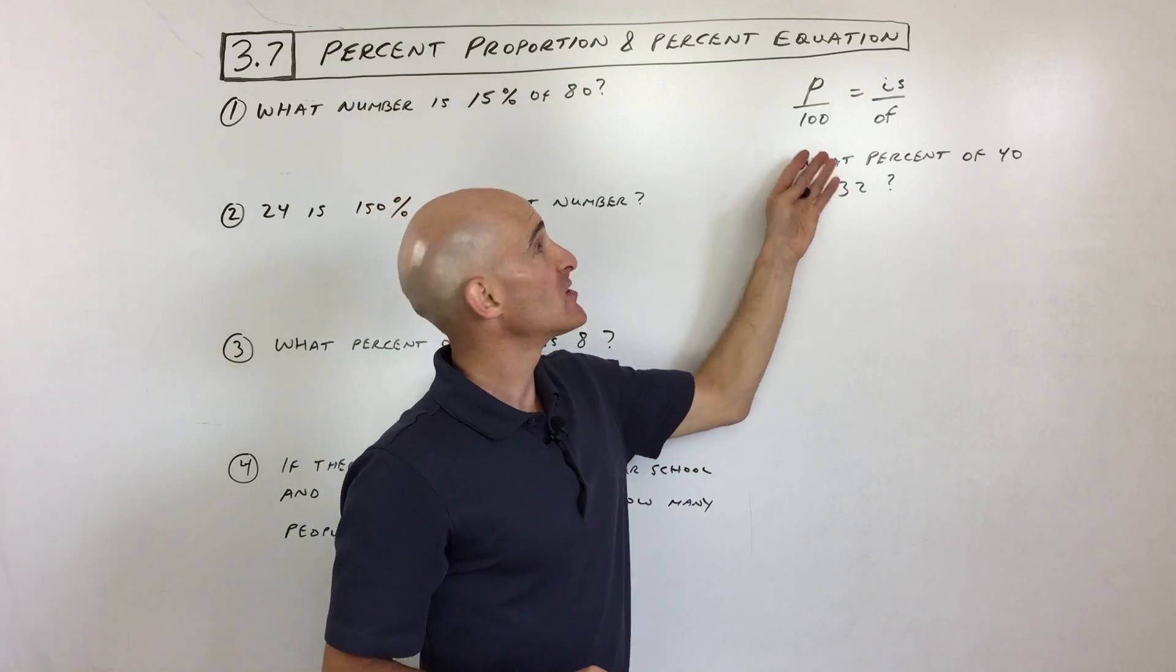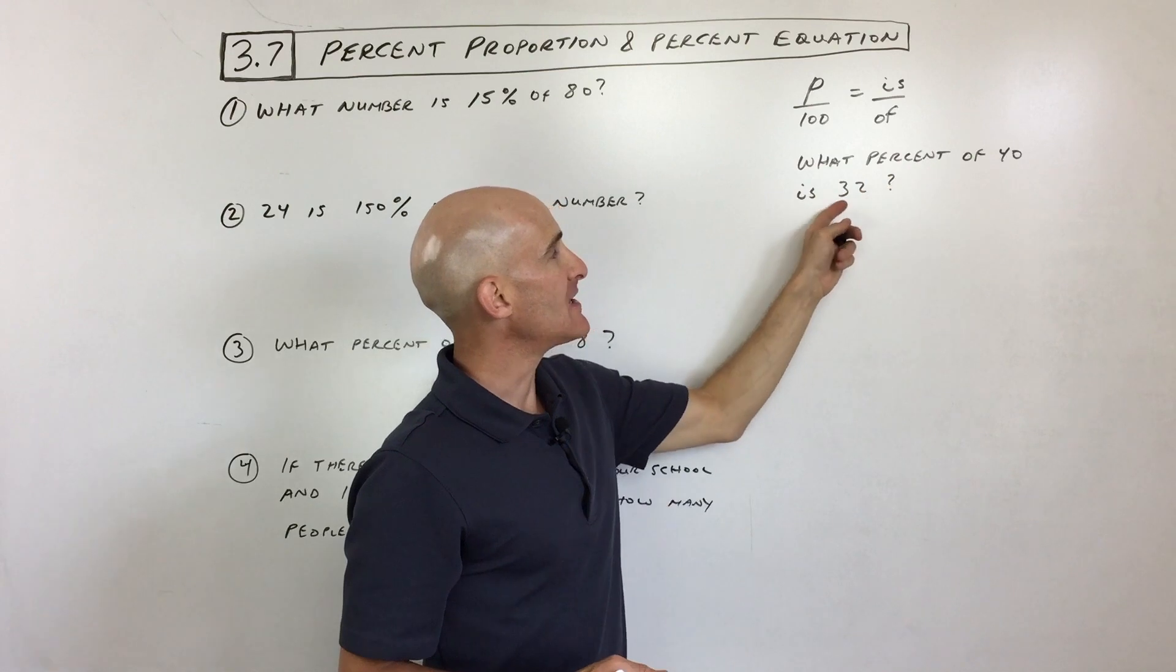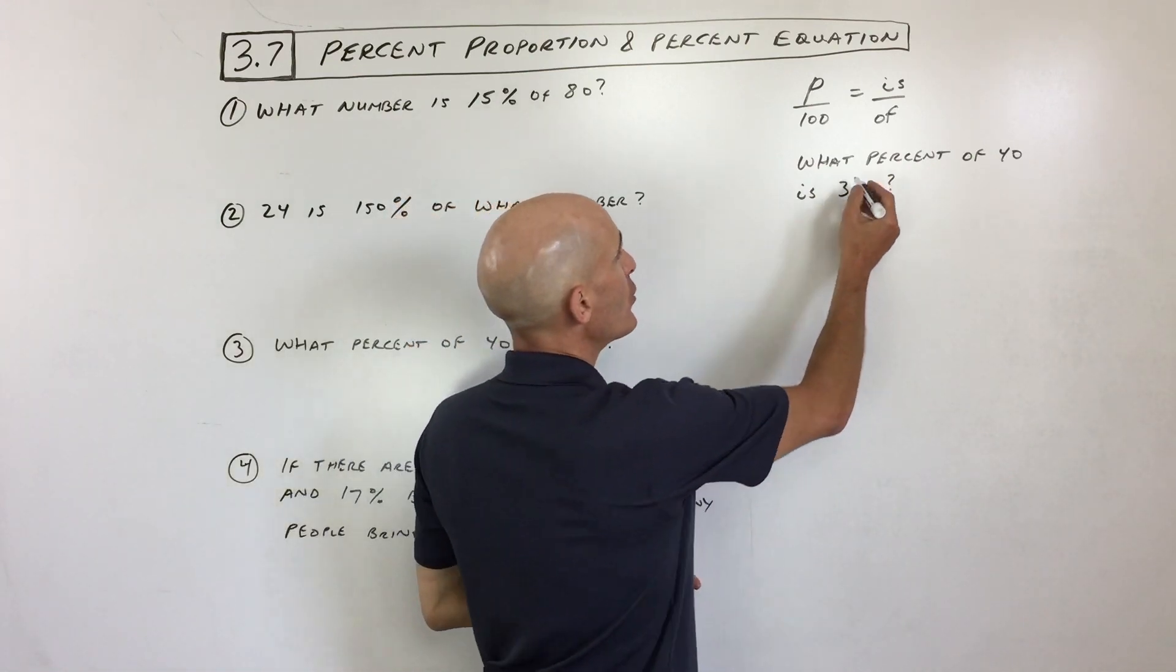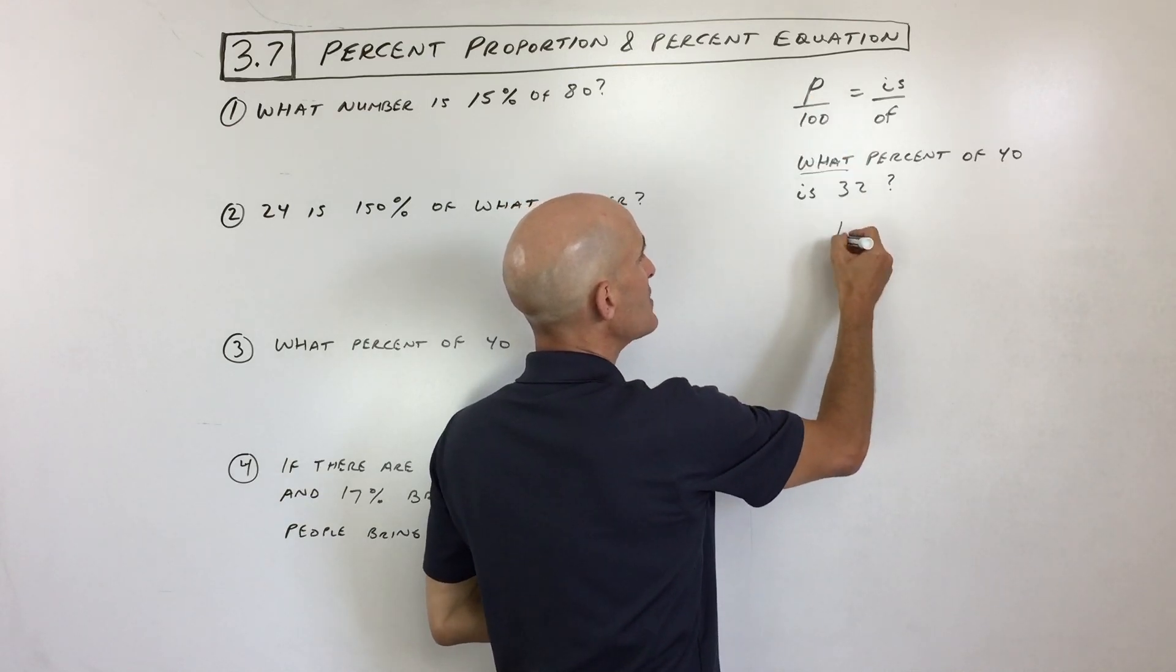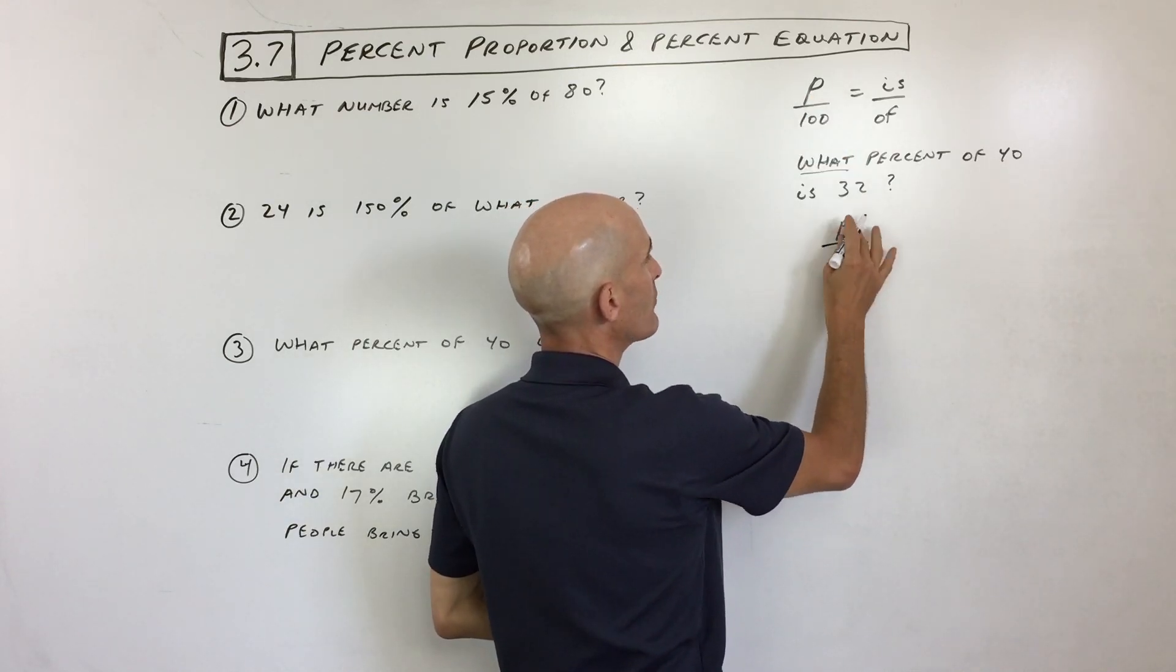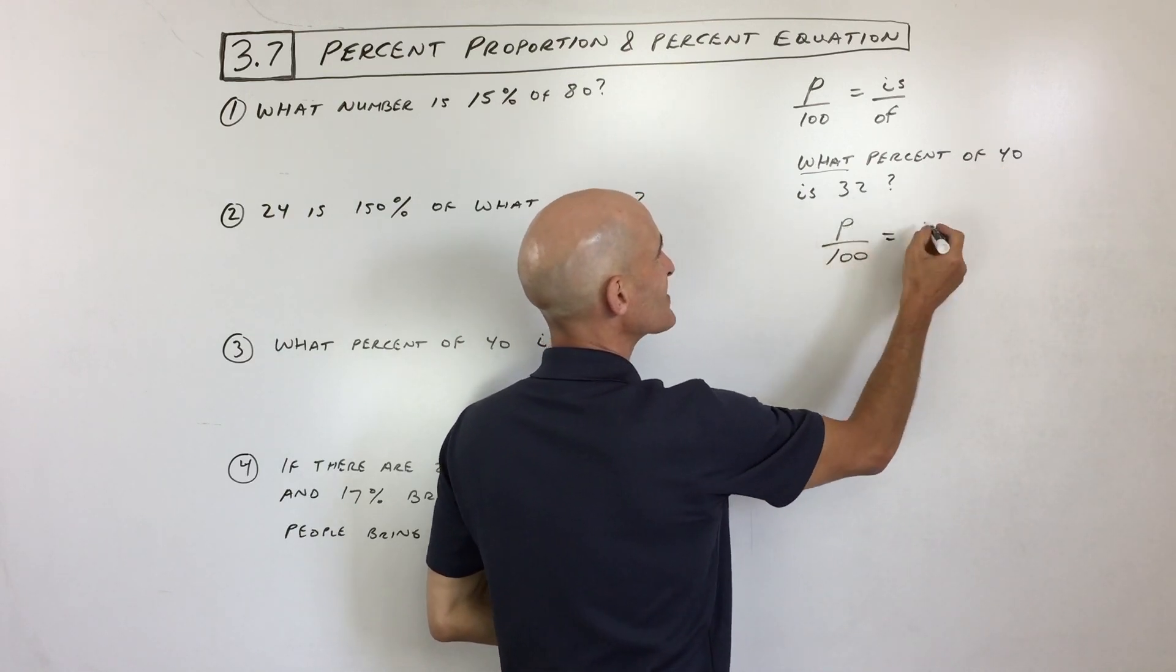I'll show you an example using the percent proportion and then one using the percent equation. So what percent of 40 is 32? So we don't know. When they say what, that's the variable. So I'm just going to leave that as P. So what percent, okay, so part out of 100, of 40, so 40 is the total is 32.